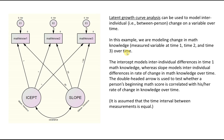This is an example of a latent growth curve analysis, which can be used to model intra-individual change on a variable over time. In this example, we're modeling change in math knowledge measured at time one, time two, and time three. The intercept models intra-individual differences in time one math knowledge — between-person differences in starting points — whereas the slope factor models intra-individual differences in the rate of change over time. Different individuals may exhibit different growth rates, and this model allows us to capture that.